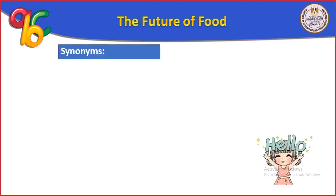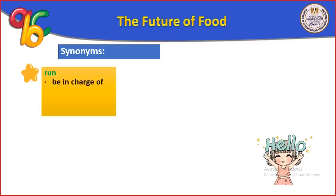Now we have some synonyms. Run means be in charge, operate, manage, or control. Summary has synonyms: synopsis, outline, maintain. Variety has synonyms: diversity, sort, type, kind, class, category.